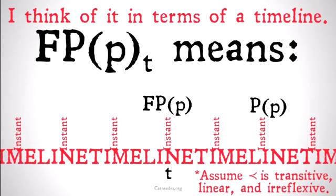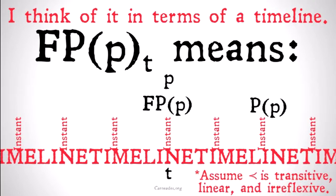FPPt means that at some point in the future, it was at some point in the past the case that p. That could mean that at some point in the future it was the case that p, which in turn could mean that p happened before now, p happened after now, or p happened right now. So FPPt doesn't give us too much information other than at some point in the timeline — basically before the end of time — p was, is, or will be true.